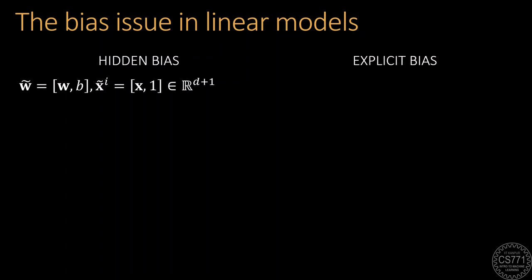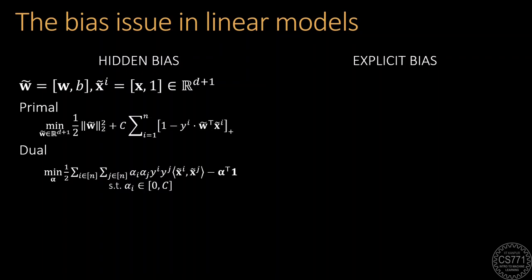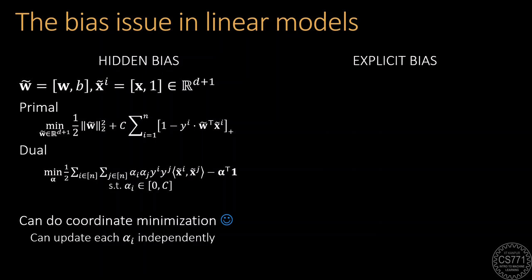This hidden bias formulation has several advantages. We are able to do coordinate minimization on the dual, and once we are done, the bias term is simply the last coordinate of the w vector.